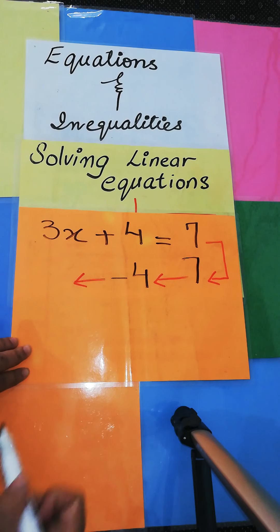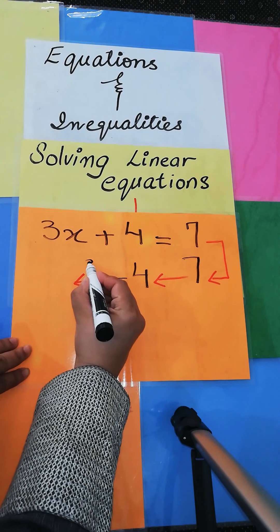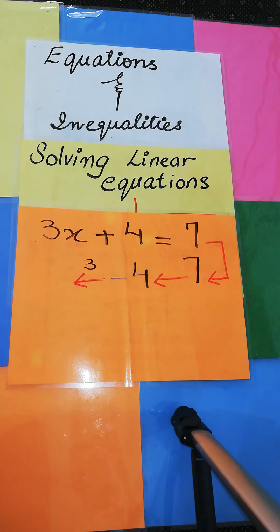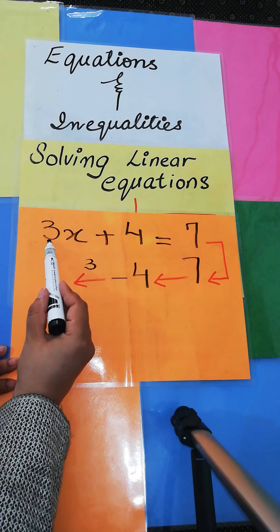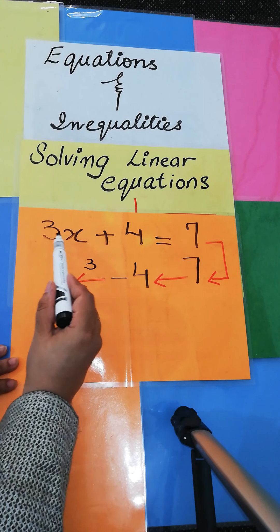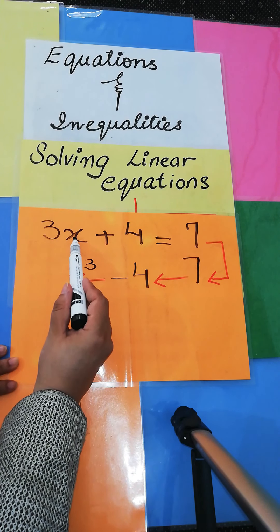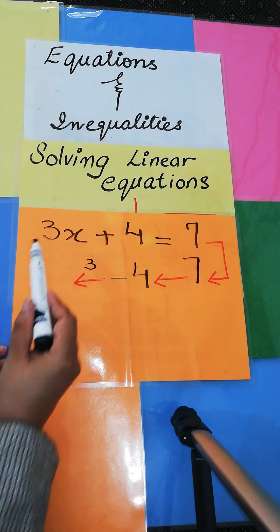So I'm going to write a small 3 on this arrow since this is the answer of it. Why am I writing it over here? Because in the next case, this 3 is being multiplied by x.